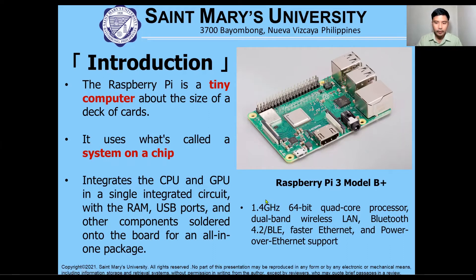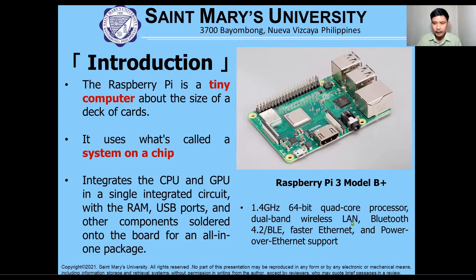Based on its specifications, the Raspberry Pi runs at 1.4 GHz, while the typical speed of a laptop or desktop computer is around 2.6 to 3 GHz. It has a 64-bit architecture — similar to most laptops — and a quad-core processor. It also has Bluetooth capability, wireless LAN, Ethernet, and Power over Ethernet support, covering all the major components you'd expect from a computer.